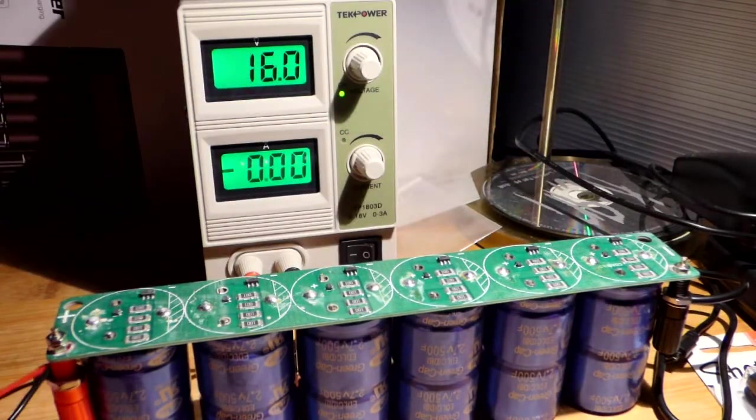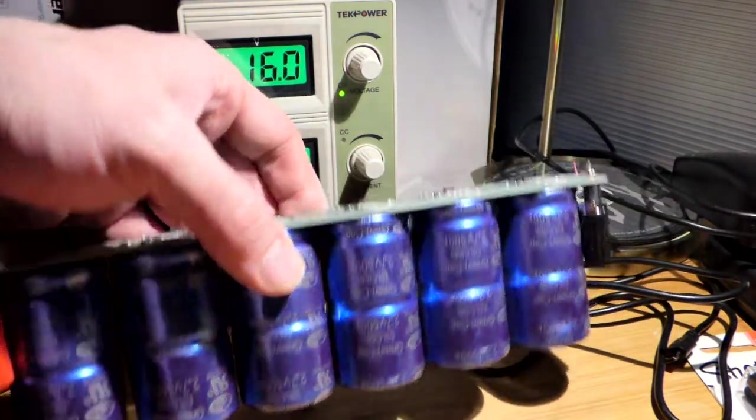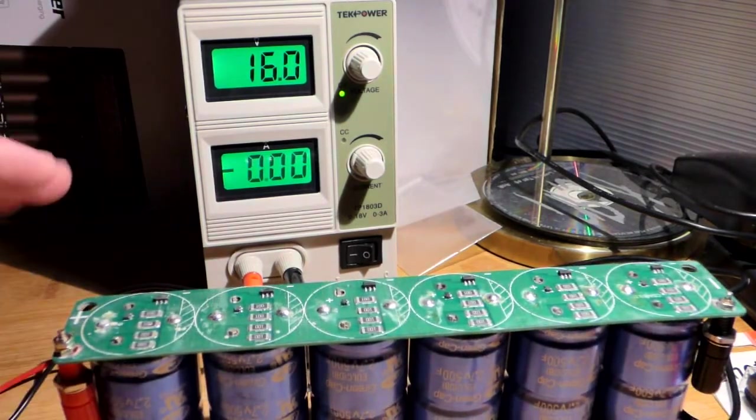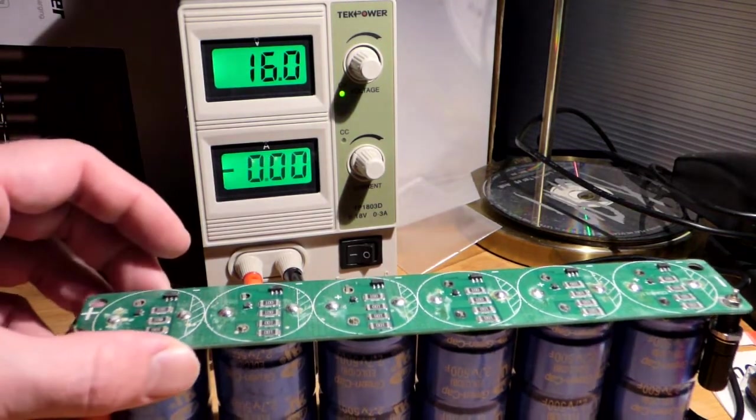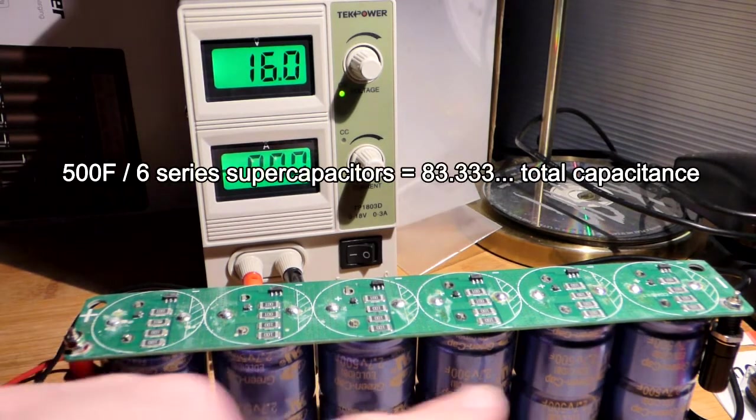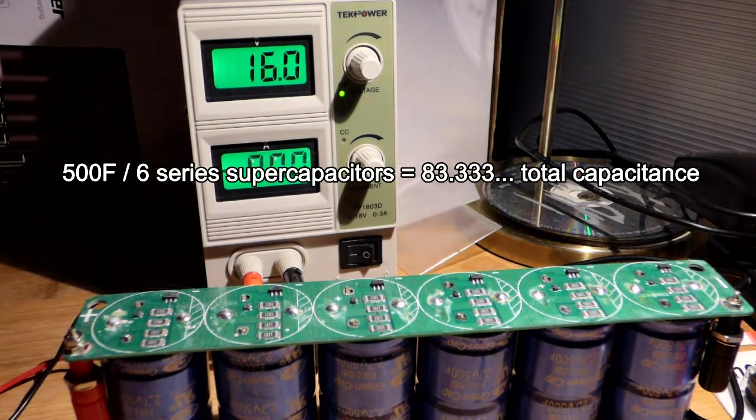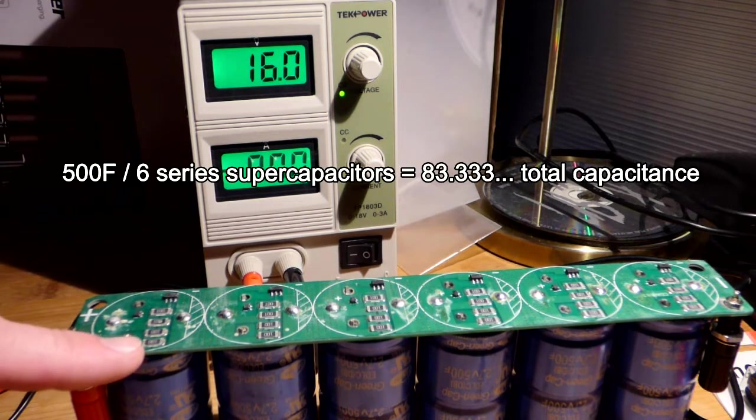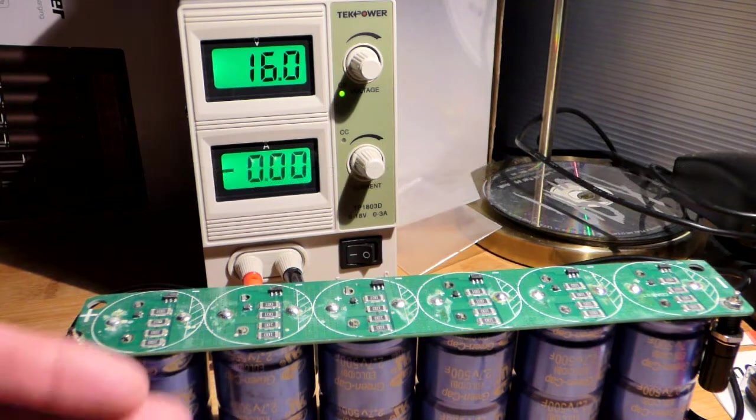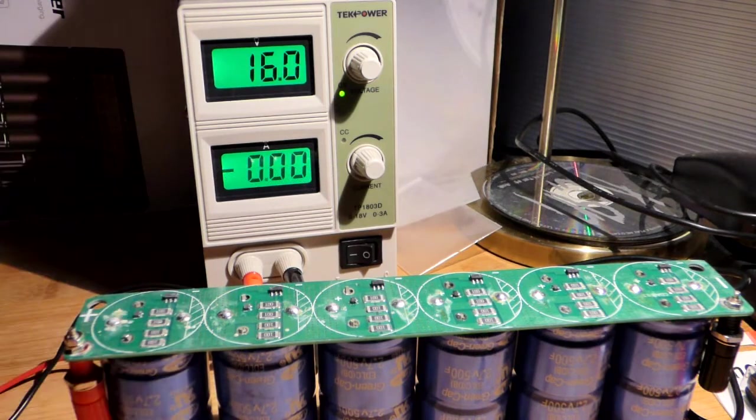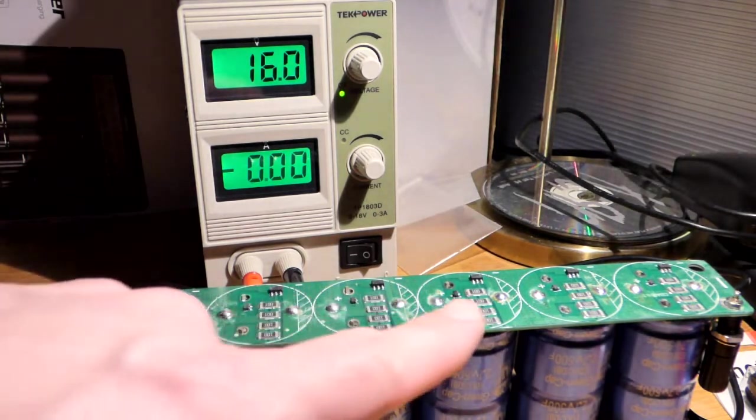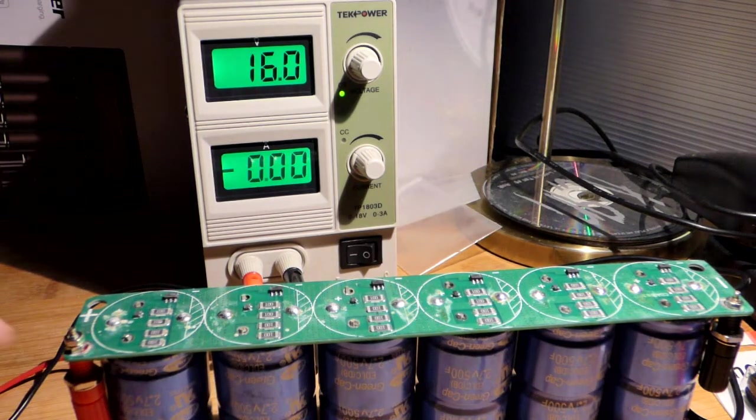Now these are each one 500 farad supercapacitors. When you put them in series, capacitance actually goes down. So one of them is 500 farad. Since they should all be completely equal in value if they were made properly, that means that we get a fraction of the capacitance while they're in series. Voltage goes up, but capacitance goes down. The main benefit for connecting them in series is more voltage.